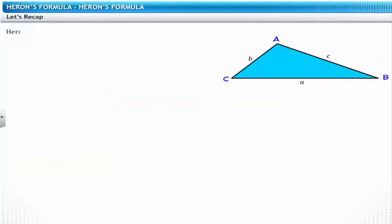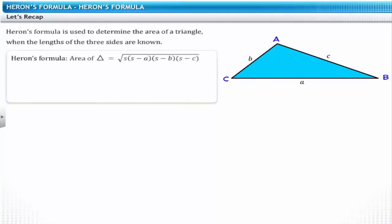Just to recap, Heron's formula is used to determine the area of a triangle when the lengths of its three sides are known. Heron's formula is expressed in terms of the semi-perimeter of the triangle and the lengths of its sides.